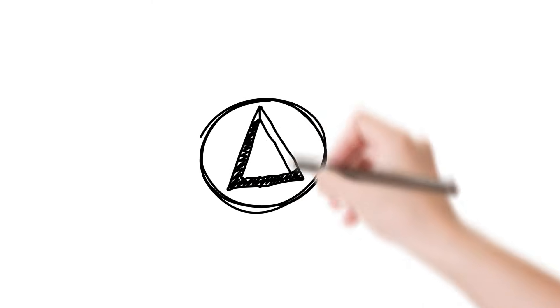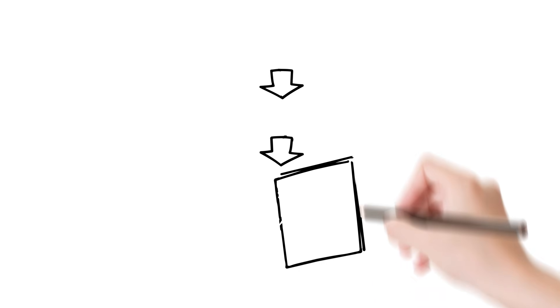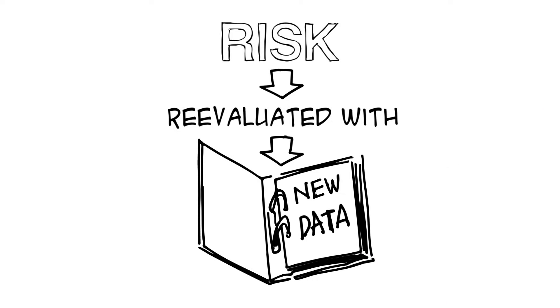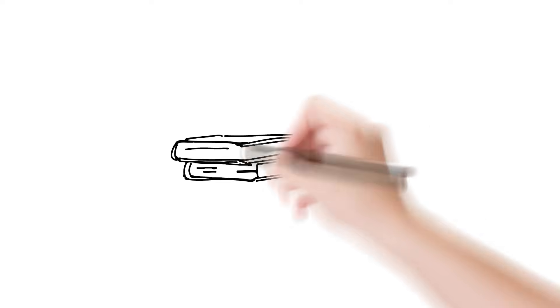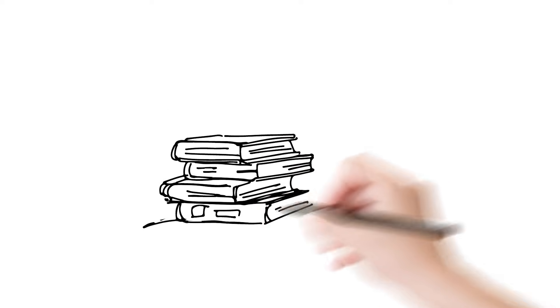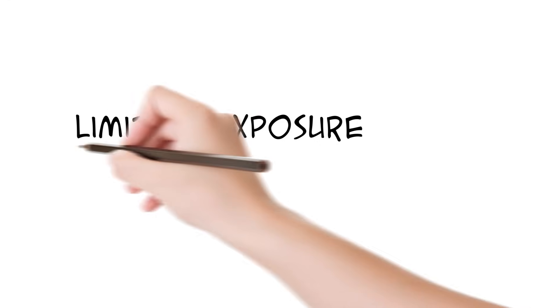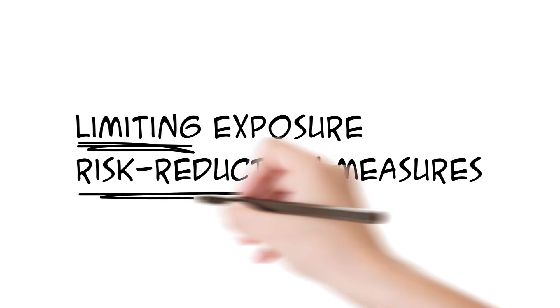It is best to err on the side of caution. Nevertheless, precautionary decisions should remain proportional to the potential but uncertain risk, and be re-evaluated when new data become available. Indeed, the proportionality principle is and should be at the base of most legal thinking. Risk can thus be managed by limiting exposure to a danger and by the adoption of risk reduction measures.